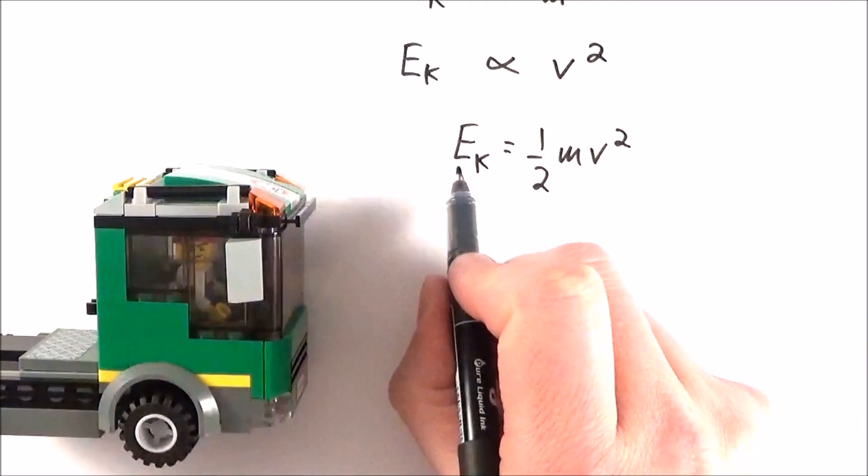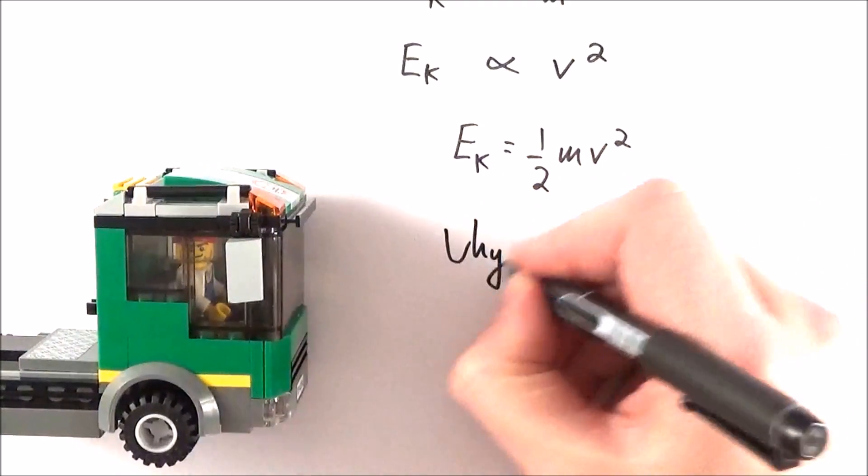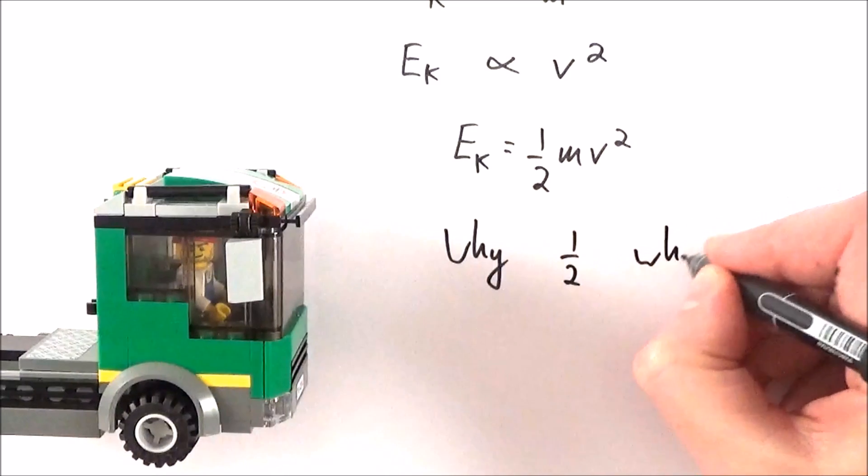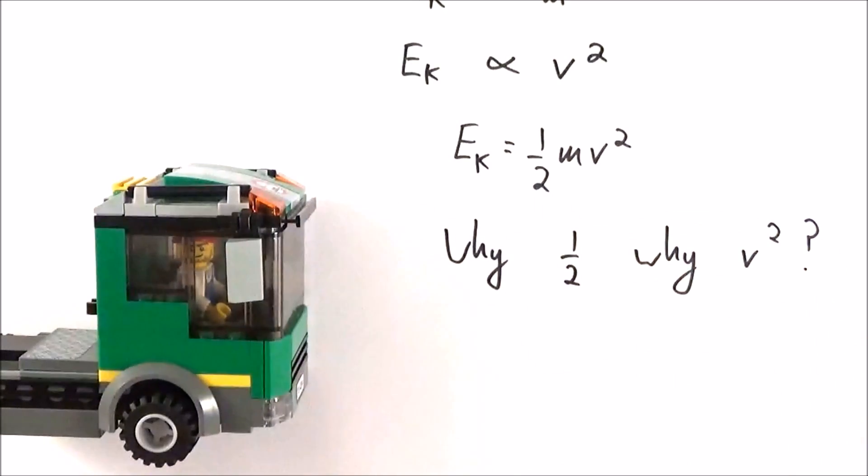The kinetic energy, Ek, is equal to half the mass times the velocity squared. But why is there a half in there? And why is the velocity squared? Well this comes from the derivation of this equation which I'd like to show you now.